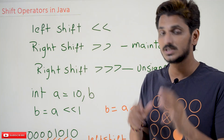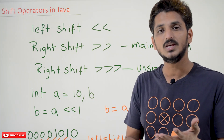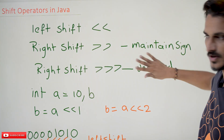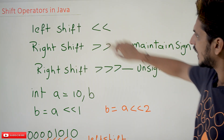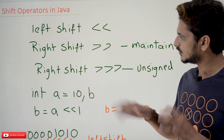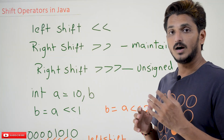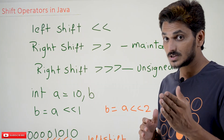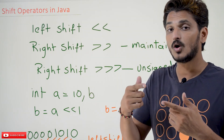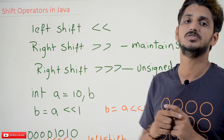We are going to understand signed and unsigned with examples. Many programming languages like C and Python don't have this unsigned right shift (>>>). They will have only these two. Here in Java we are having another one also. Watch this class till the end because the explanation we are going to provide here will help you a lot in solving placement exams and GATE bits easily.